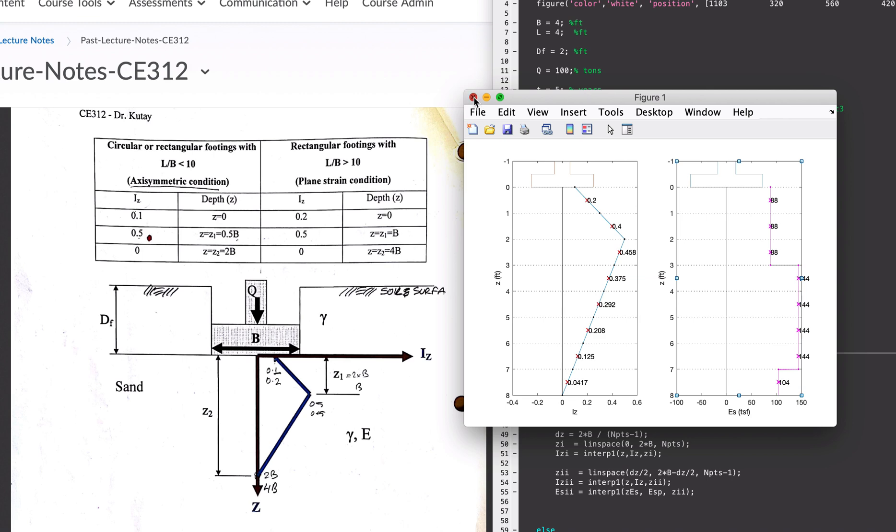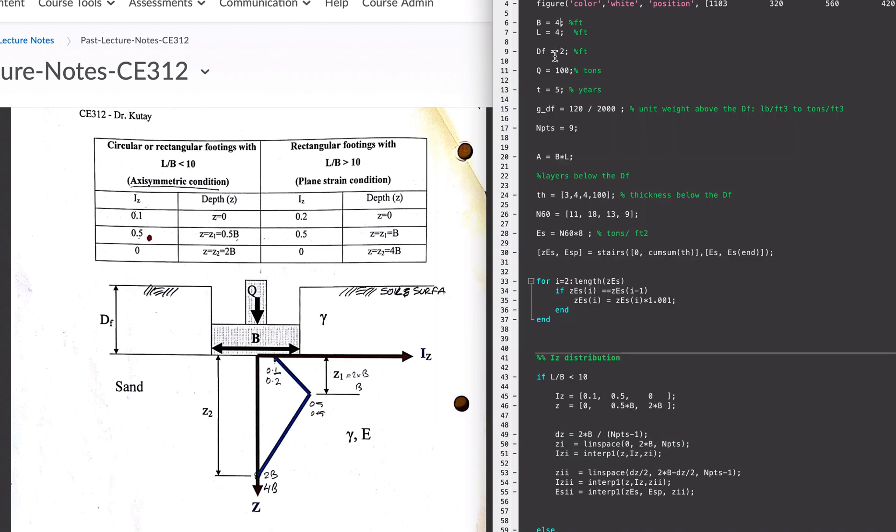When Z is twice B, which is right here, IZ goes back to zero. This is the graph for this particular case. Let me close this and make L ten times more, let's say 45 feet by four feet, so L divided by B is more than ten.